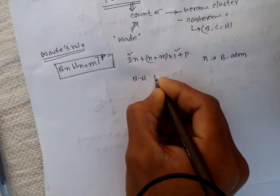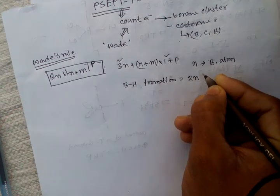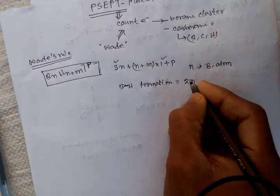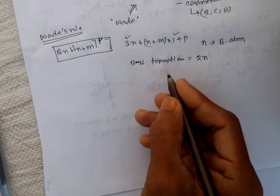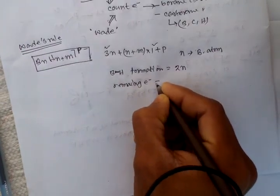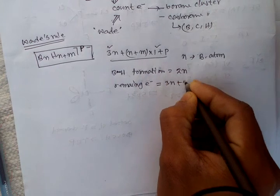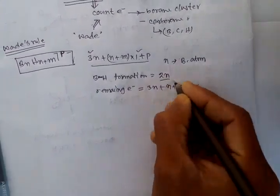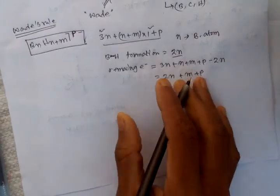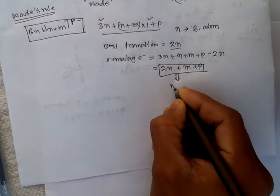We know that one electron is required for a B–H bond formation. The valence electrons for bond formation are: 1 electron per B–H bond and 2n electrons total. So the remaining electrons of the boron system — the skeletal electron count — is 2n + m + p.